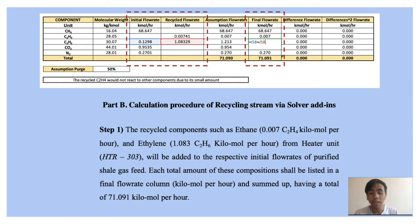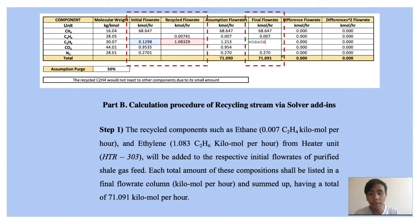For Part B, the recycled components such as ethane and ethylene from the heater unit are added to the respective initial fluids of purified shale gas feed. There are two columns: initial flow rate, recycled flow rate, and final flow rate. Each total amount of composition is listed in the final flow rate column, summed up to a total of 71.091 kilomoles per hour.